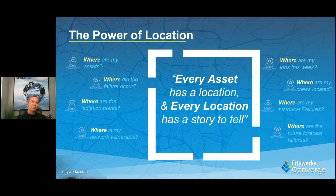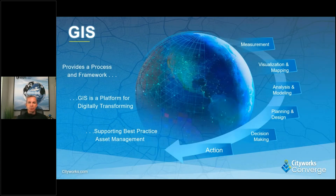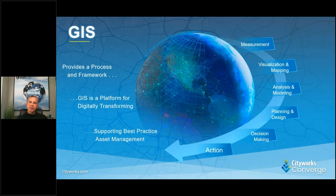This is where GIS plays such a critical role. A modern GIS is not just the design or mapping of the water network. A modern GIS is the platform which provides a process and a framework to support your business workflows and it supports these best practices for asset management. GIS provides the capabilities to measure and capture data about your assets, visualises and maps the location and network connections, provides advanced analysis and modelling, and it is a complete planning and design solution that assists with decision making which ultimately leads to action.